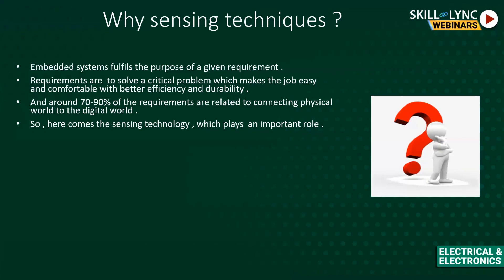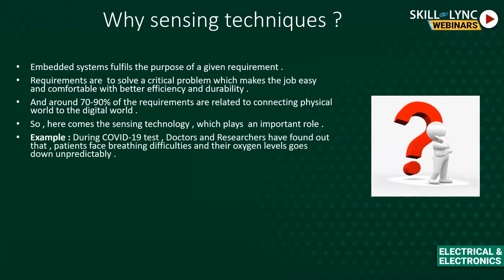Key sensor parameters to consider include temperature range, resolution, durability, and features. For example, some sensors have internal memory or communication protocols, allowing you to store data inside the sensor itself. This is why sensing technology is so critical — in any embedded system, at least one feature is related to sensing techniques.